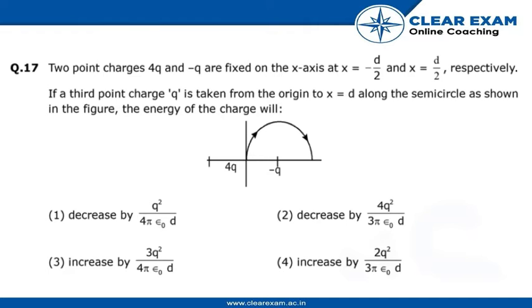If a third point charge Q is taken from the origin to x equals D along the semicircle, as you can see in the figure, the energy of the charge will be—we have to find out the energy of the charge.